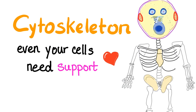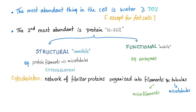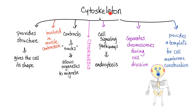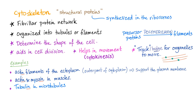Your body needs a skeleton and your cells need a skeleton. Most of your cells is water; the second most thing is protein — structural or functional protein. Structural proteins are immobile and they form the cytoskeleton. The cytoskeleton is a network of fibrillar proteins organized into tubules (microtubules) or filaments (microfilaments). Monomers into polymers. They determine the shape of the cell. Examples: actin and tubulin. Actin was the microfilament — the topic of the previous video. Today's topic is tubulin in microtubules.